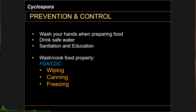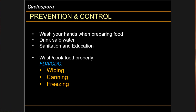Wiping is recommended since cysts tend to stick to fruits and vegetables. Canned and frozen products are never implicated in disease outbreaks. Sporulation does not occur at extremes of temperatures. Therefore, freezing and cooking prevents sporulation, and therefore prevents infection.